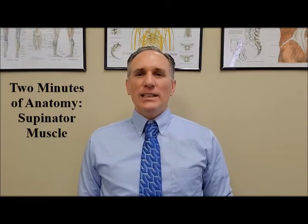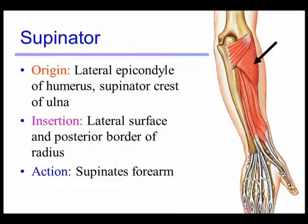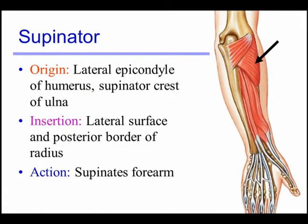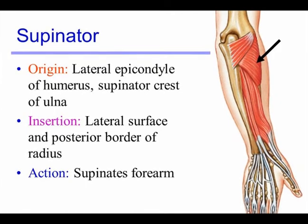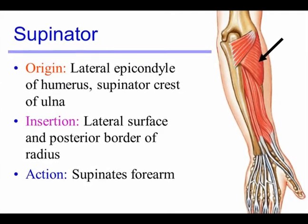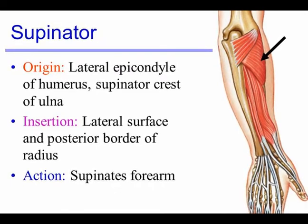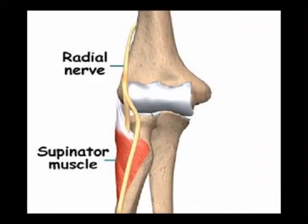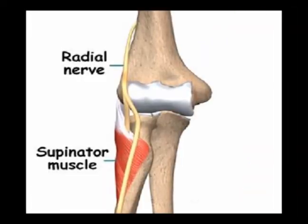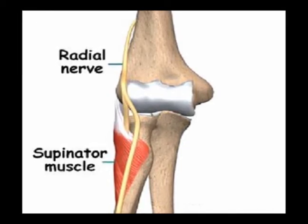The supinator muscle is in the posterior forearm. It is classified as one of the deep posterior forearm muscles. The origin of the supinator muscle is the lateral epicondyle and the supinator crest of the ulna. The insertion is the lateral surface of the radius. The innervation is the deep branch of the radial nerve from vertebral levels C7 and C8.